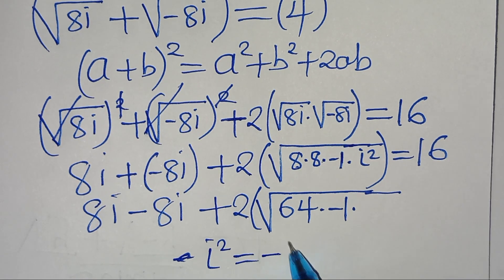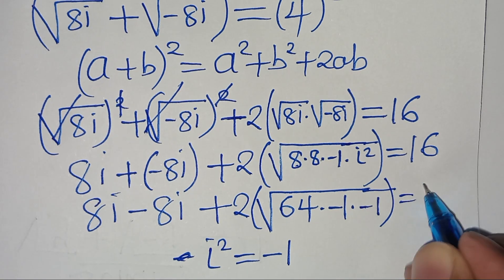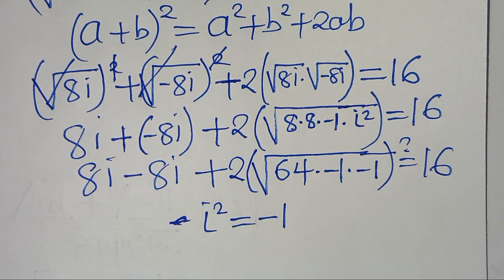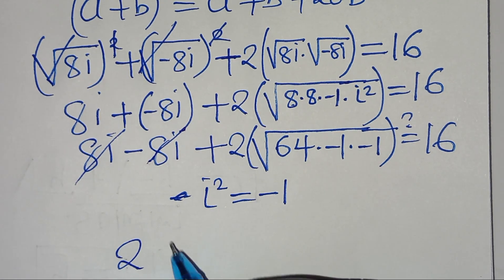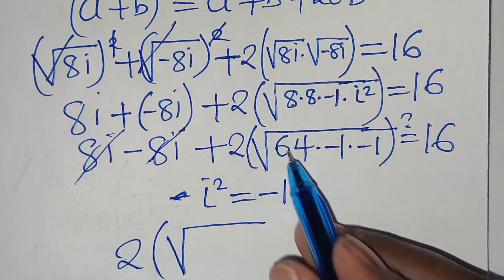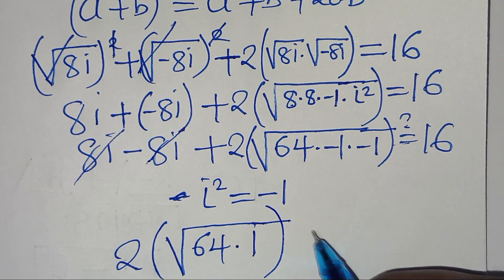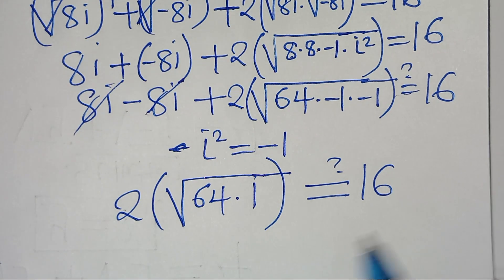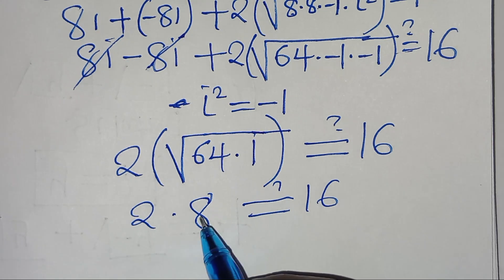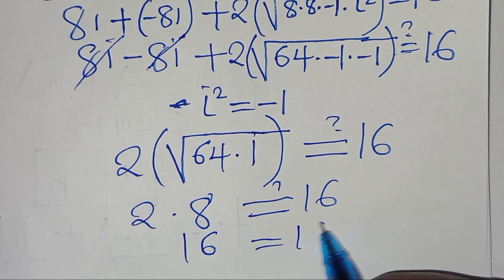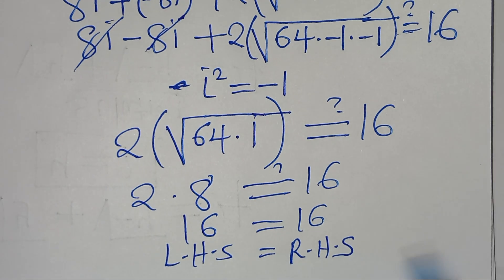Since i² equals minus 1, substituting: we have 8i minus 8i, which simplifies to 0, plus 2 times the square root of 64 times minus 1 times minus 1. Since minus 1 times minus 1 equals 1, we get 2 times the square root of 64, which is 2 times 8, equaling 16. This confirms that the left-hand side equals the right-hand side, proving that k₁ equals 8i satisfies the equation.